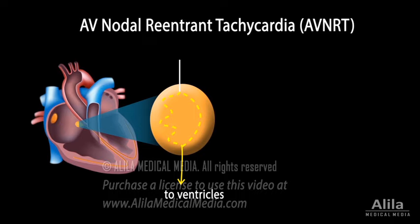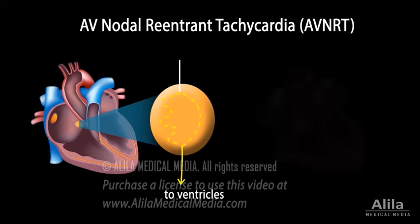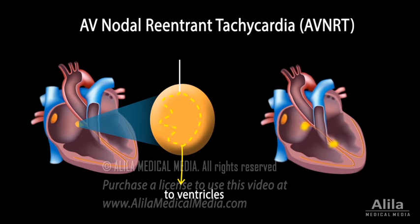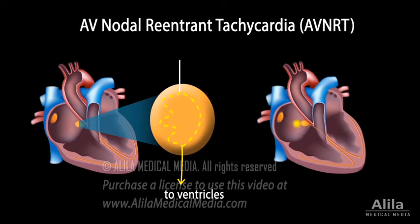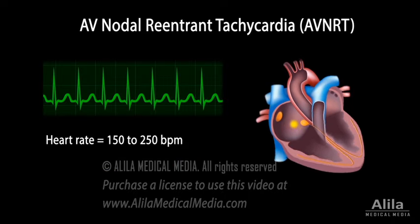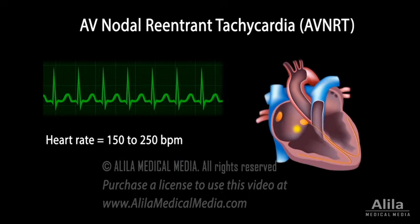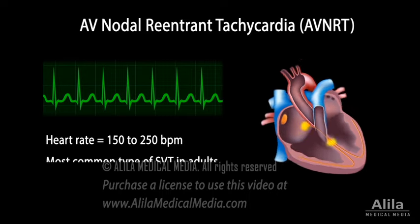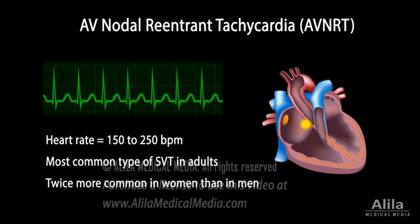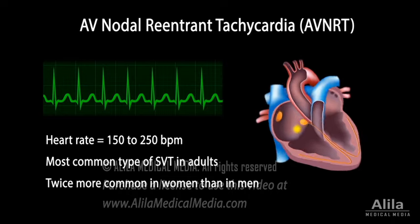If this continues, a self-perpetuating loop called a reentrant pathway may arise. With each cycle, the signal is transmitted down to the ventricles. The atrial and ventricular rates are identical, regular, and fast. AVNRT is the most common type of SVT in adults and is twice more common in women than in men.